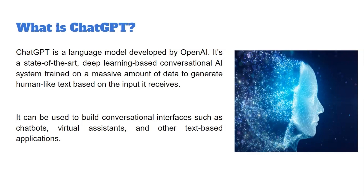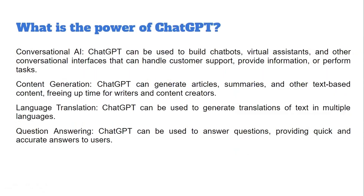ChatGPT is a human language type model — it can read natural languages and take inputs in human form, the way people speak to each other, and give answers based on the knowledge it has. So what is the actual power of ChatGPT? Why is it the talk of the year? Since it launched in mid-November last year, within a couple of months it got so much popularity.